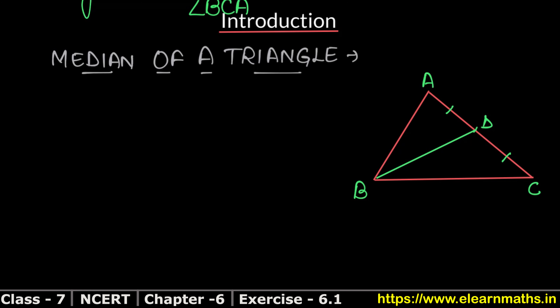Just like we drew median from B, we can also draw a median from C to point F on AB, where AF equals BF. So a triangle has three medians, and each median connects a vertex to the midpoint of the opposite side.